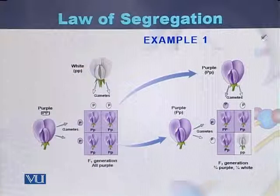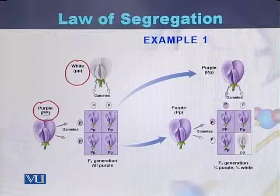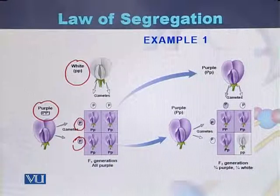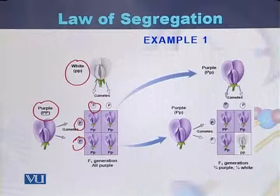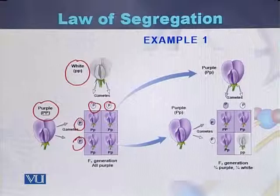Here is the first example: one plant is producing purple color flowers and one plant is producing white color flowers. The first plant will produce gametes capital P and capital P, while the second plant producing white color flowers will produce small p and small p gametes. This is the first step — during the process of gametogenesis, the gametes separate from each other.